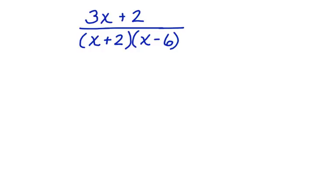Now I want to find the excluded values. Remember, the excluded values are the values that makes each factor equal to 0. Which factors am I talking about? I'm talking about this factor, and I'm talking about this factor. So let's rewrite each factor, making it equal to 0.